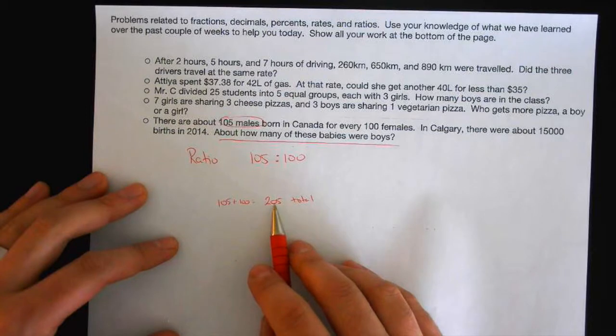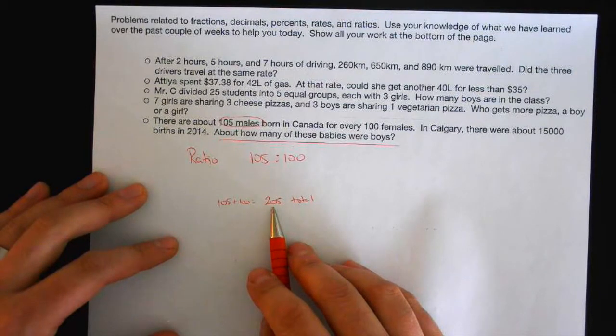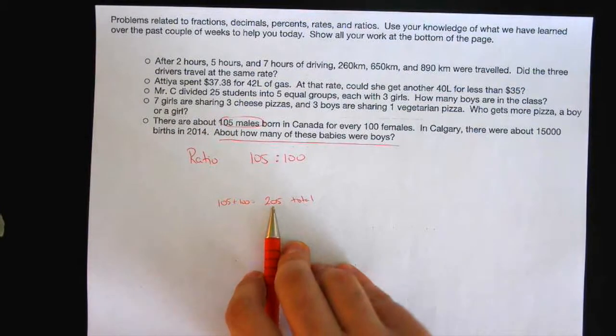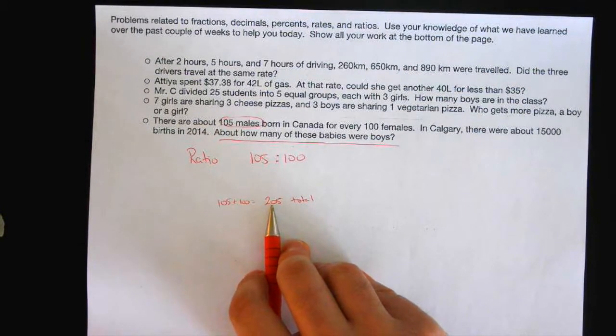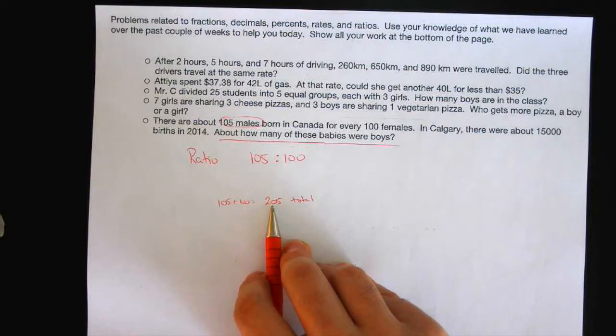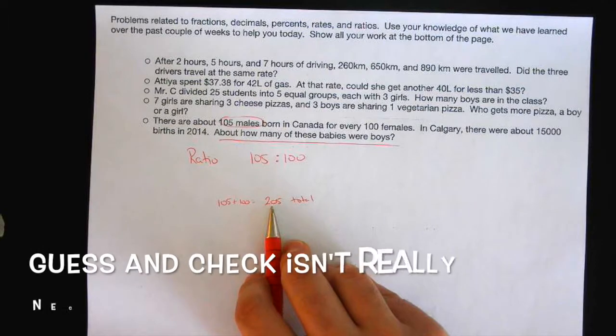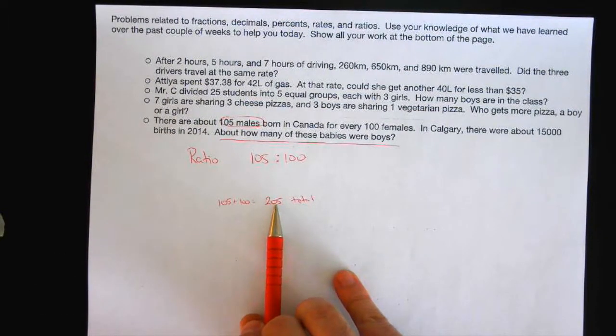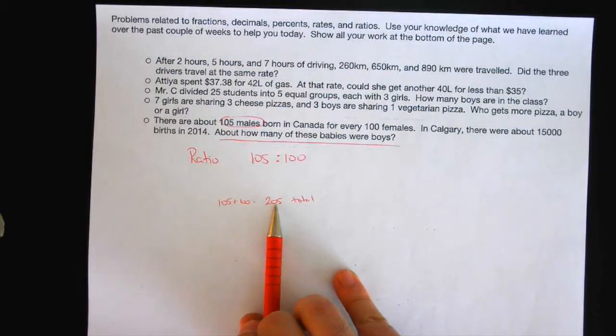But why did you need this total? What concept are you using? When you're finding this total, what is the purpose of you finding this total right now? What could you use it for? This will eliminate your guess and check. Because guess and check can be time consuming. What can we do now that we have a total of 205? What math concept do we need when we have a total number?